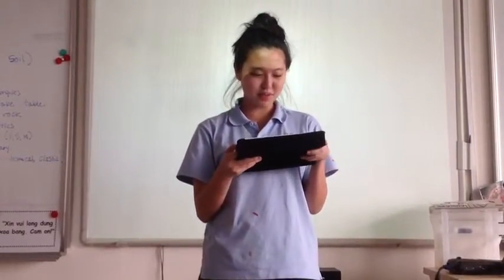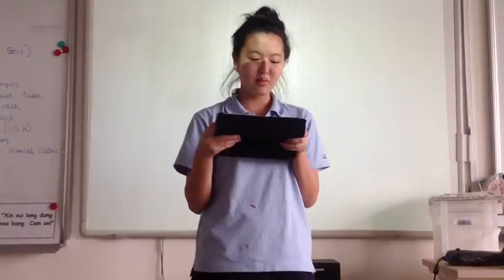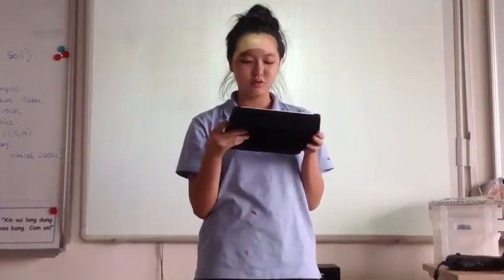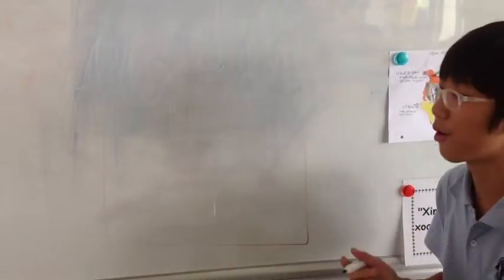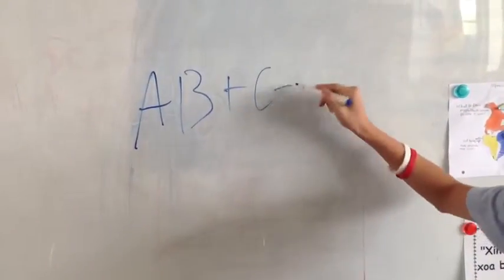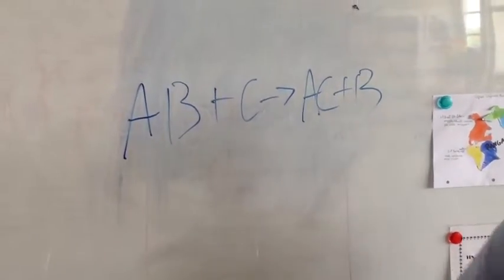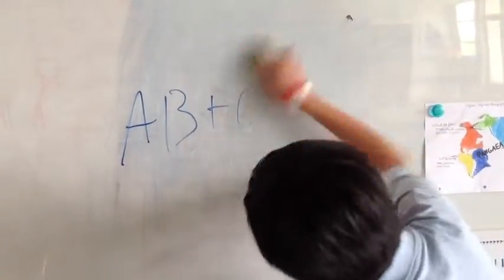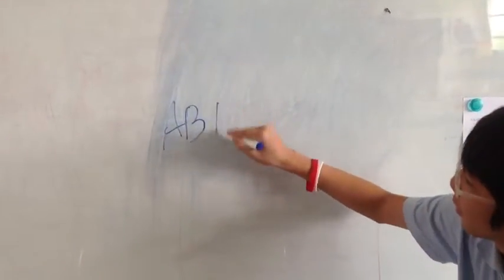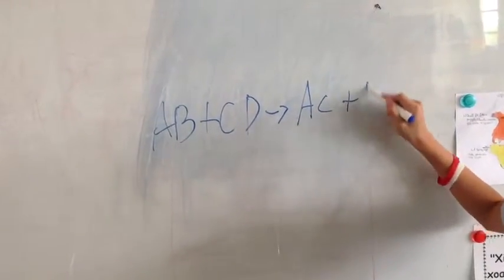Single displacement is when a compound and a substance bond together and one replaces the other in the compound. Double displacement is when two different compounds bond together and replace one of their elements with one from the other compound. The equation for single displacement is AB plus C equals AC plus B, and for double displacement it is AB plus CD gives AC plus BD.